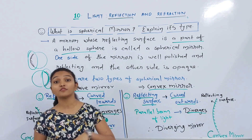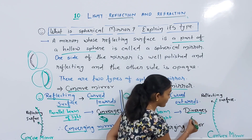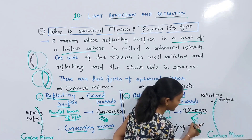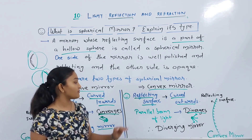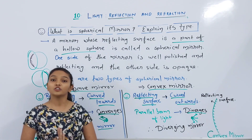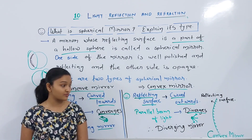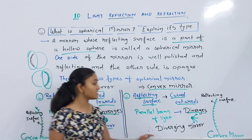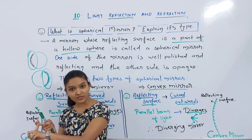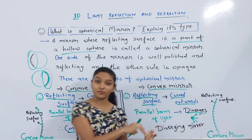In the concave mirror, parallel beams of light converge. In the convex mirror, parallel beams of light diverge — they spread out from a point. So the concave mirror can be called a converging mirror and the convex mirror a diverging mirror.